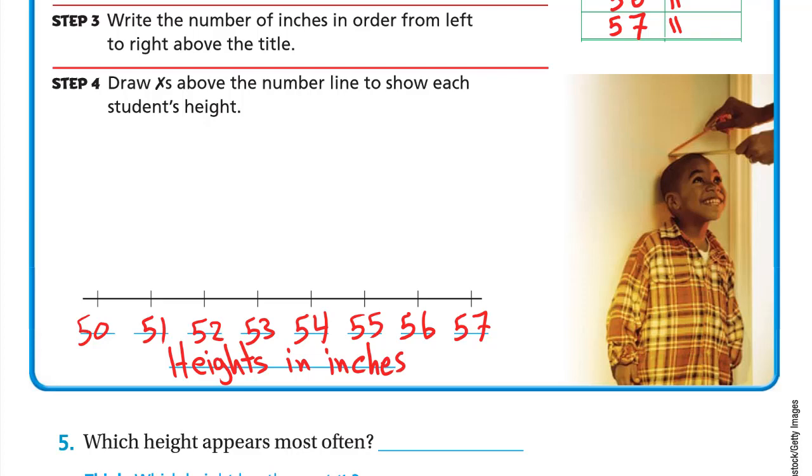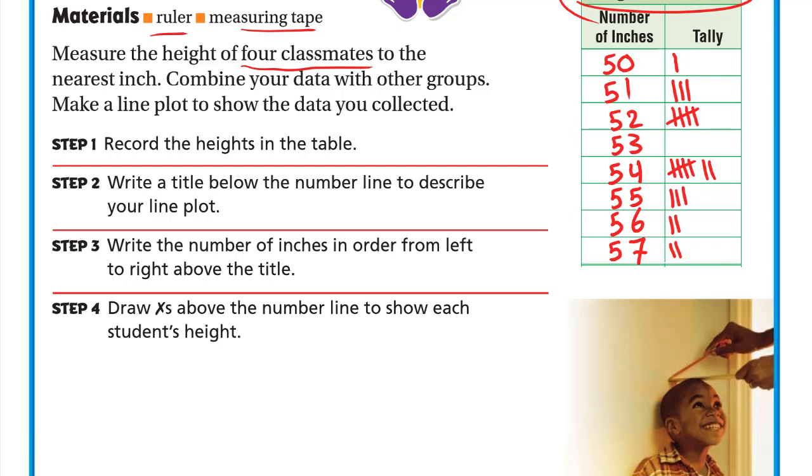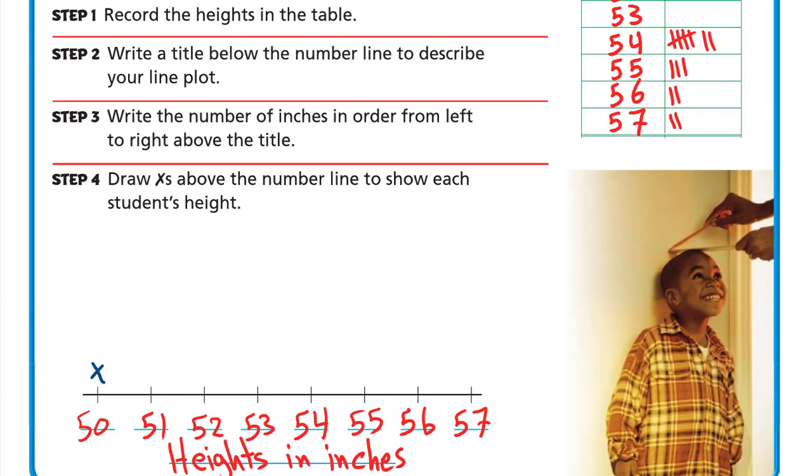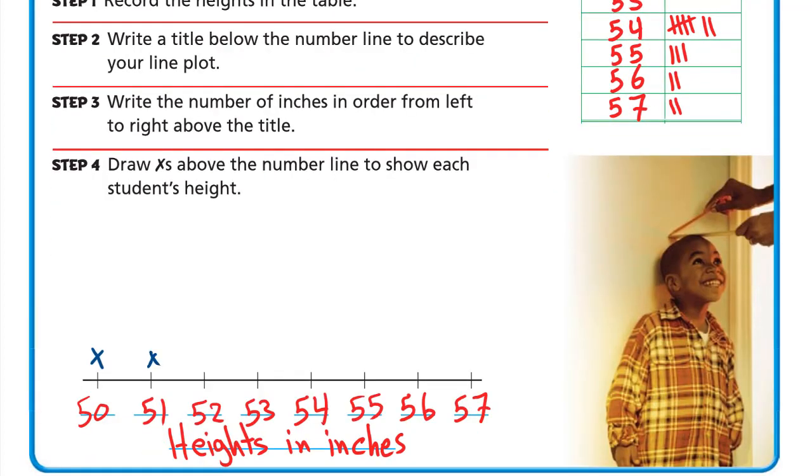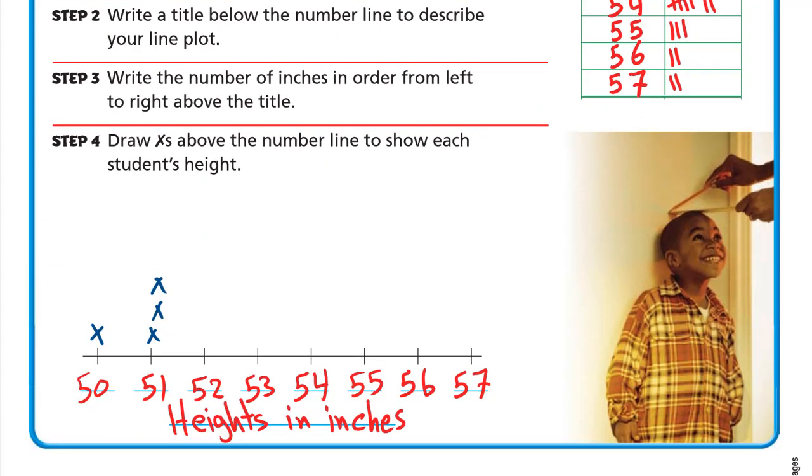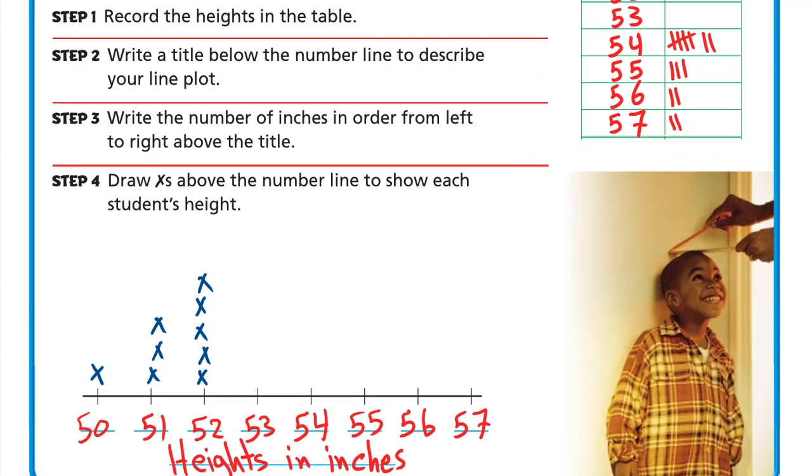Step four: Draw X's above the number line to show each student's height. For 50, we have one student only, so we'll draw one X. For 51, three students, so one, two, three X's. For 52, five students, so one, two, three, four, five X's. For 53, no one.